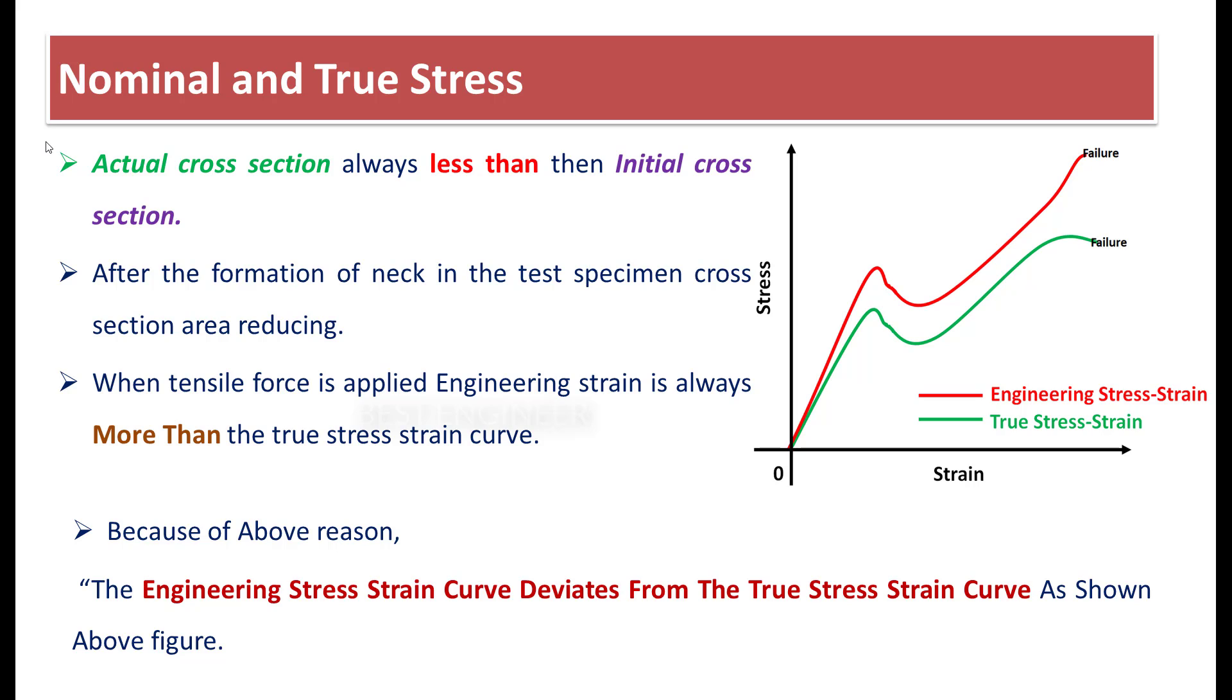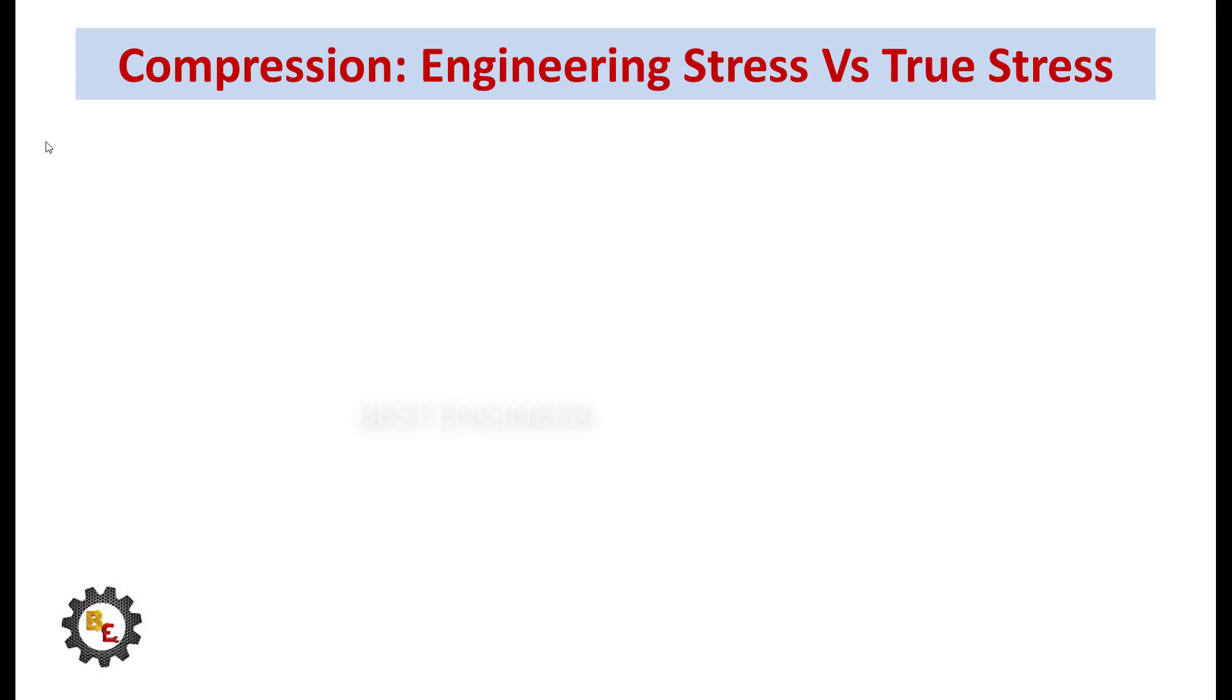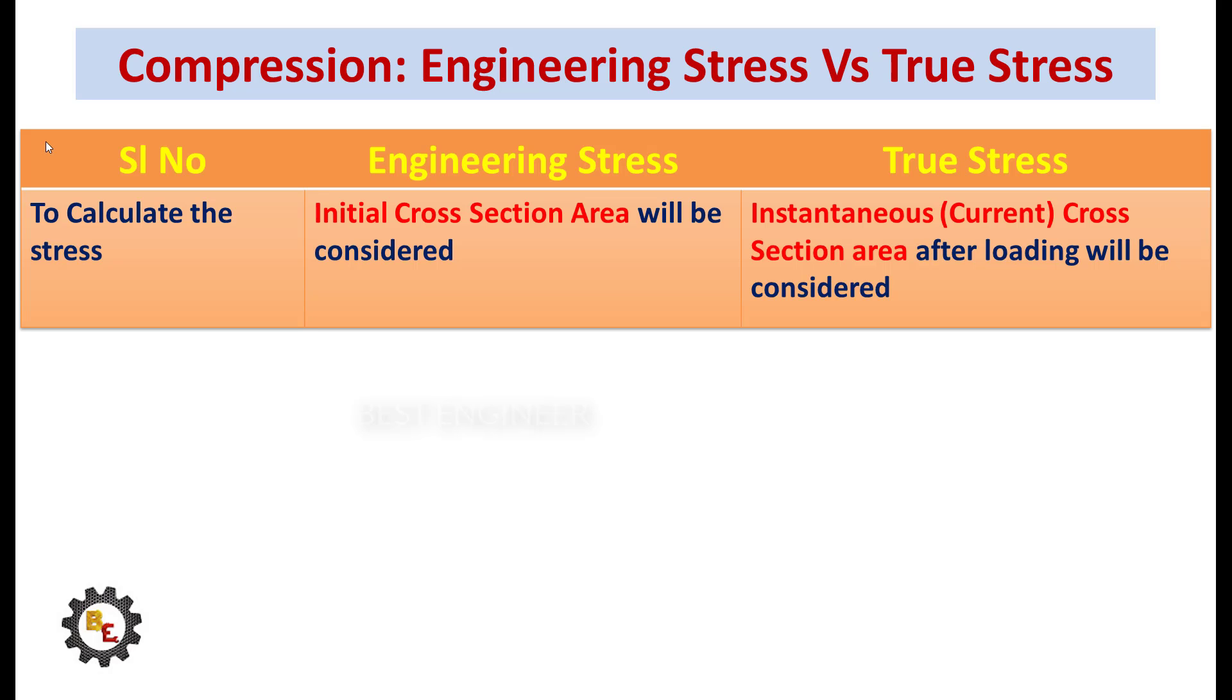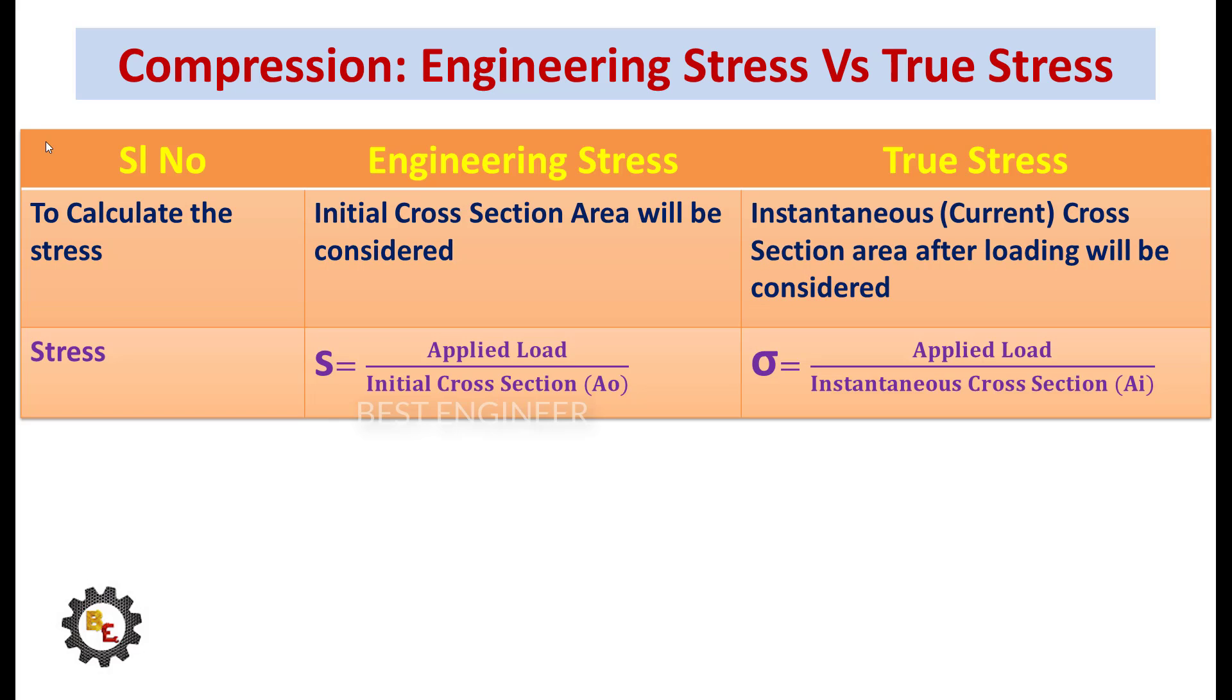Let us compare the nominal stress and engineering stress. In nominal stress, the initial cross-section area will be considered. In instantaneous stress, current cross-section area will be considered. In nominal stress, stress is the ratio between applied load to initial cross-section area.